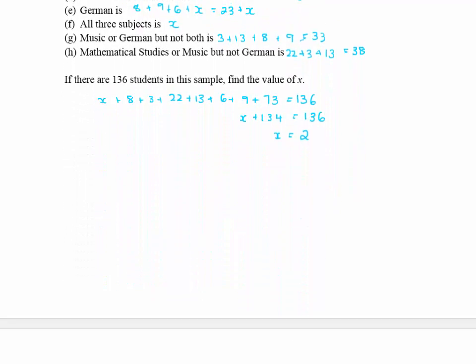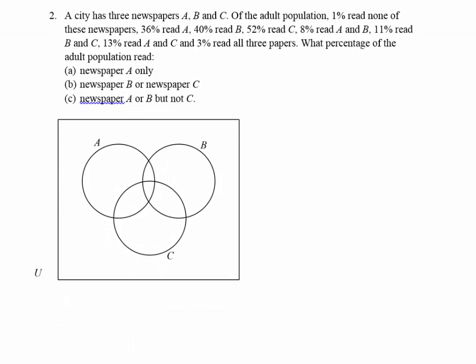Now let's look at the last question. A city has three newspapers A, B, and C. Of the adult population, 1% read none, so I put 1% outside the circles. 36% read A, 40% read B, 52% read C, 8% read A and B, 11% read B and C, 13% read A and C, and 3% read all three. The 3% goes in the middle intersection.